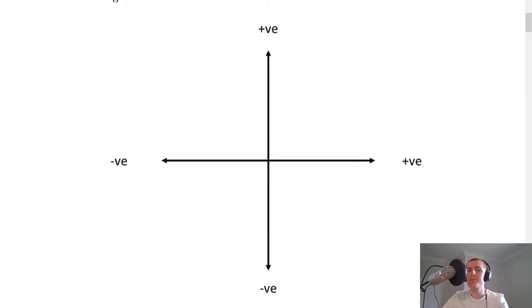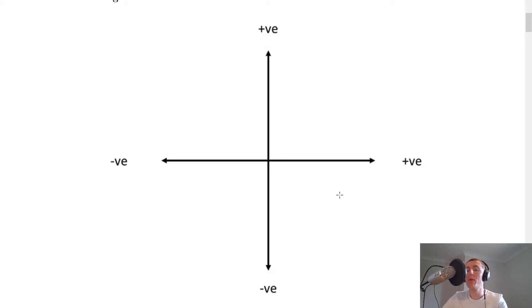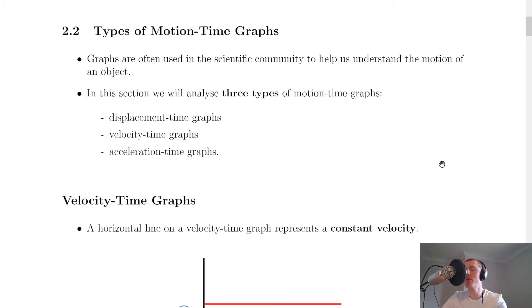Anything moving upwards or to the right is positive, and anything moving to the left or downwards is negative. This is a general rule throughout the Higher Physics course, but sometimes problems might lend themselves better to having downwards motion as positive — for example, if an object is moving downwards to begin with. But more often than not we will be using this sign convention.